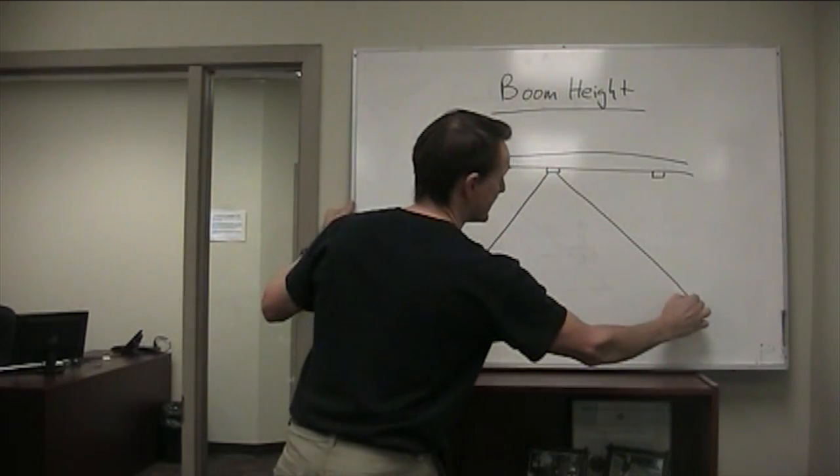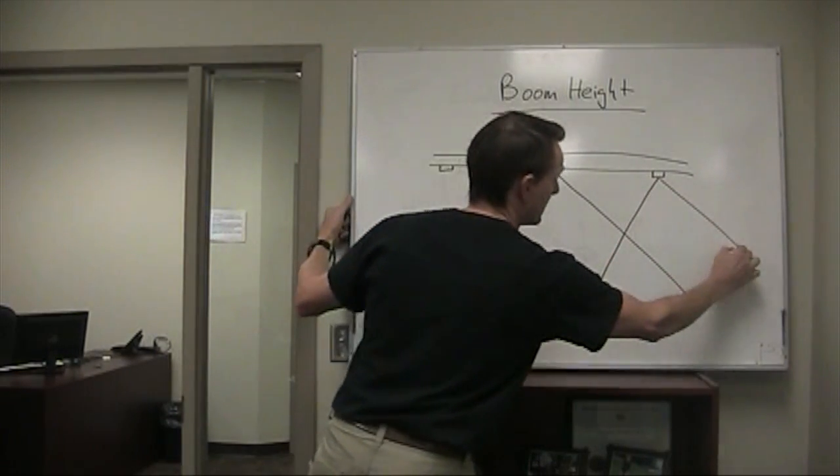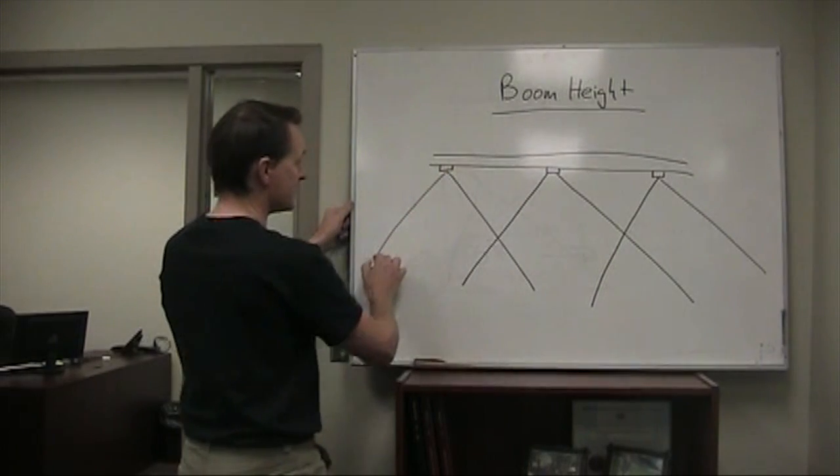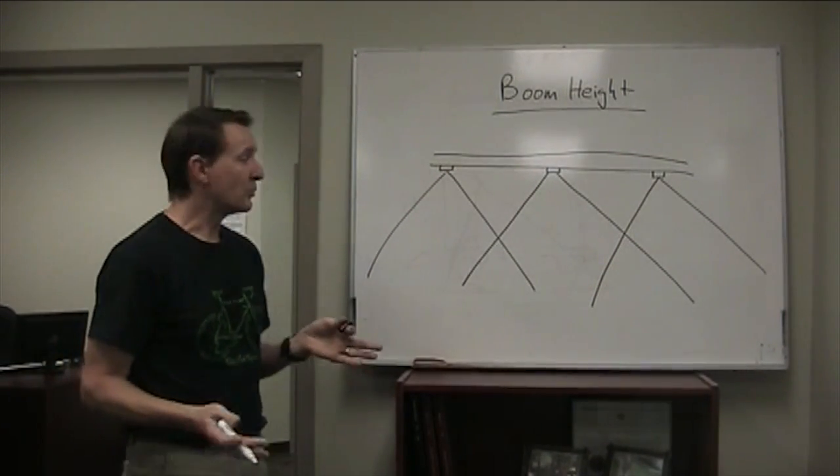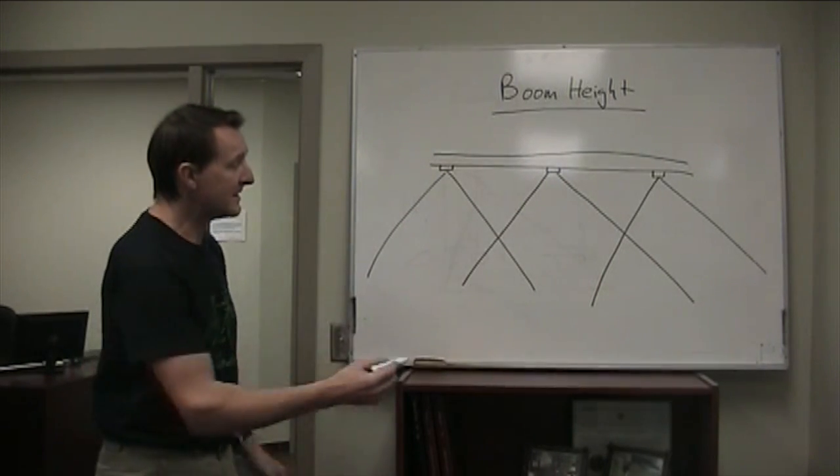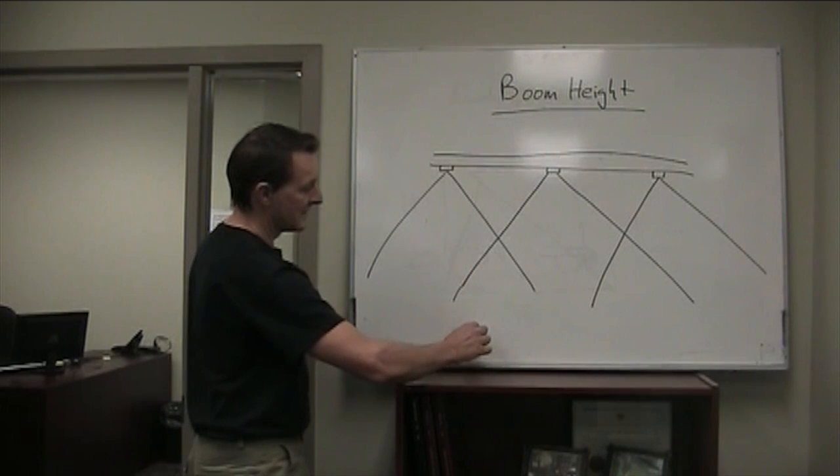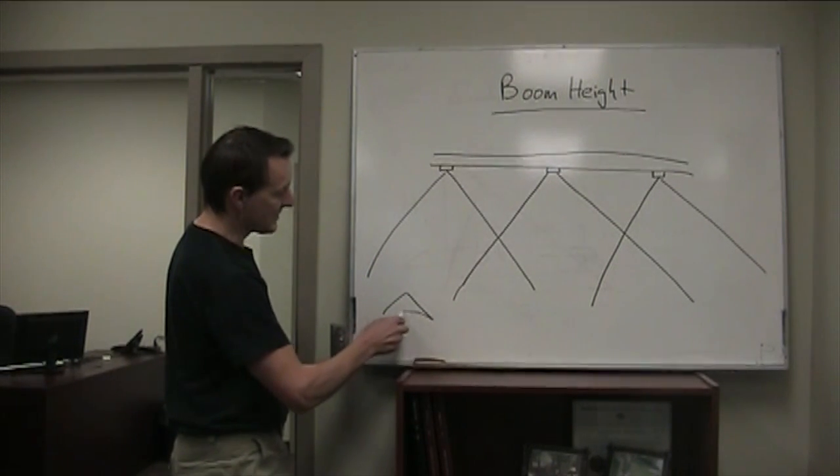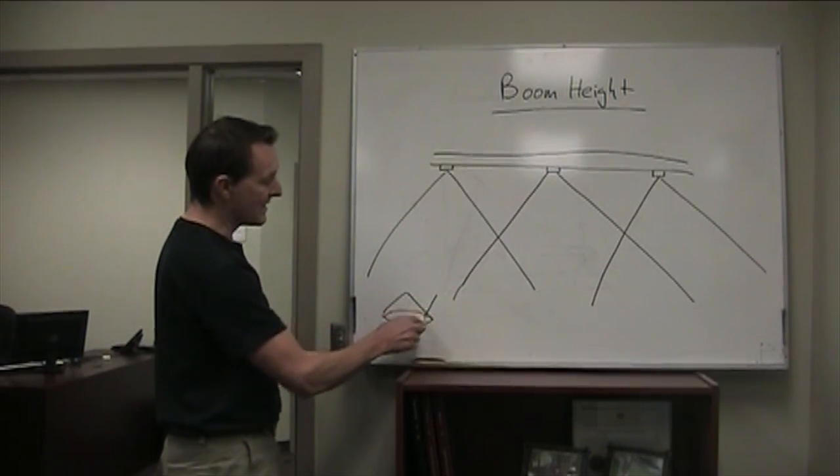This nozzle generates a fan-shaped pattern and these patterns tend to overlap. The traditional way to set the boom height was because the patterns have an elliptical pattern. If you were under a single nozzle, the amount of liquid coming out would be less at the edges and more in the middle, so you had to have a little bit of overlap to compensate for that.